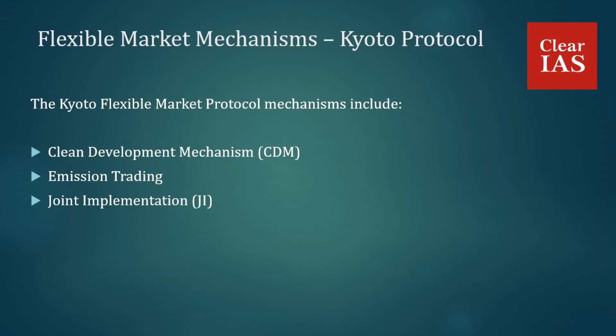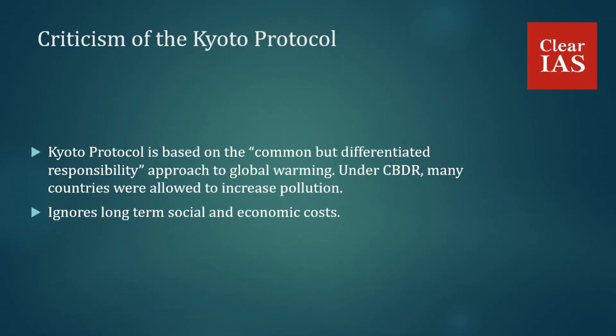Under the Kyoto Protocol, Annex One countries can meet their targets by cutting emissions or by buying unused allowances and carbon credits from other countries. This approach ignores long-term social and economic costs, and is like committing to only half of what one needs to commit. The CBDR approach also allowed many countries to increase pollution. Furthermore, the protocol excluded the most polluting countries — China and India — which have since become the world's largest and fourth-largest polluters respectively.